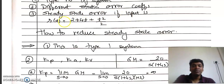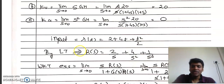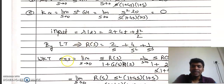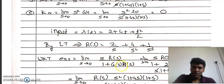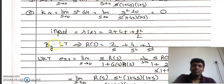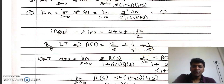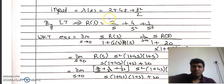We need to find ESS when input is 2 + 4t + t²/2. Taking the Laplace transform: R(s) = 2/s + 4/s² + 1/s³. Substituting into the ESS formula: ESS = lim(s→0) s·(2/s + 4/s² + 1/s³) / [1 + G·H].